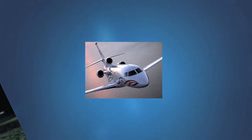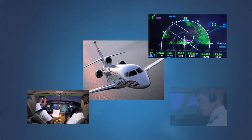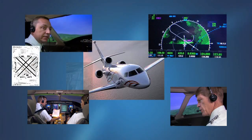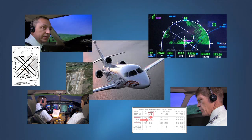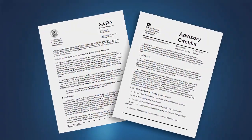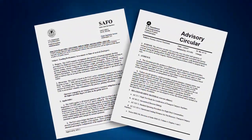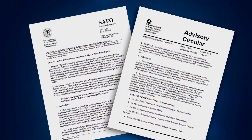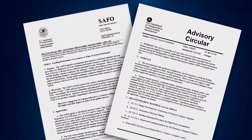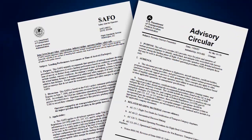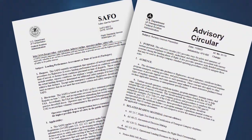Operators of turbojet airplanes are encouraged to develop standard operating procedures for flight crews to assess landing performance based on the runway conditions actually existing at time of arrival. Ultimately, it is up to the crew — based upon the amount of time, type of tools, and information available to them — to decide the most appropriate time to accomplish this assessment, and how detailed it must be based on the situation facing them. For more information, flight crews are encouraged to review Safety Alert for Operators 06012, Landing Performance Assessment at Time of Arrival, and Advisory Circular 9179, Runway Overrun Prevention.